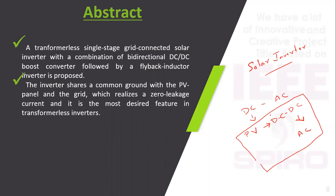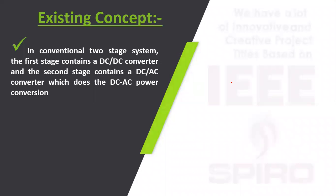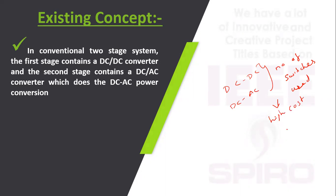The DC to DC conversion stage is needed because a single solar panel array is only capable of 12 volts, so the voltage must be boosted to the required DC level before converting to AC. In conventional circuits, both the DC to DC and DC to AC operations require a large number of switches, which leads to high cost and a non-compact design.